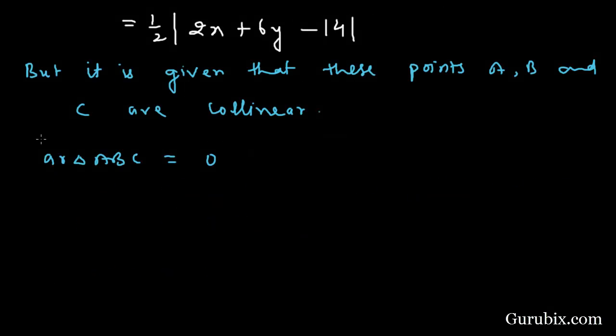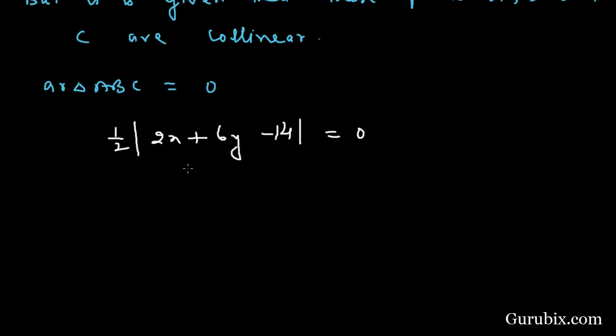This means 1 over 2 mod 2x plus 6y minus 14 will be equal to 0. And mod gives us positive value, so if we multiply 2 with 0 then we have 2x plus 6y minus 14 equals to 0. This means x plus 3y minus 7 equals to 0.